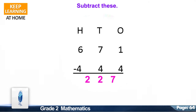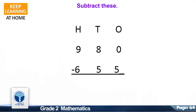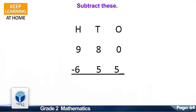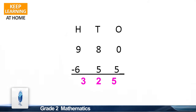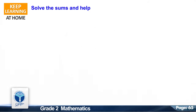The correct answer is 227. Now the last question is 980 minus 655. The correct answer is 325. Now we move on to the next resource pack concept.